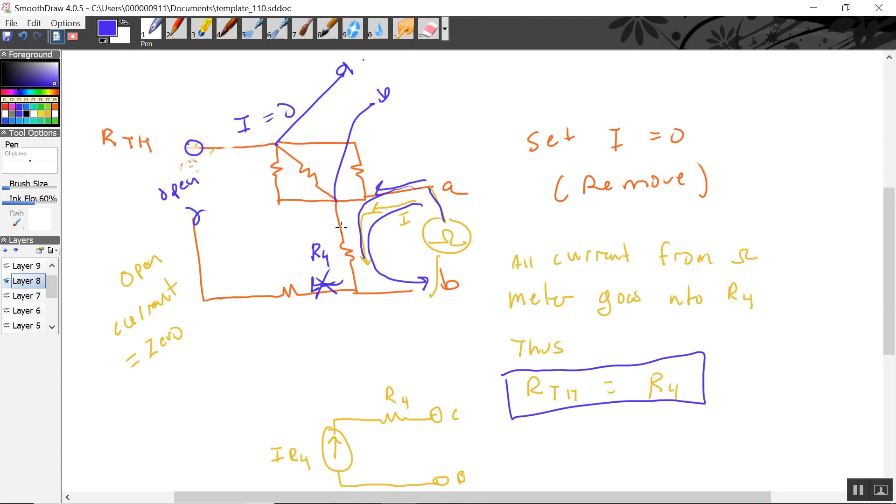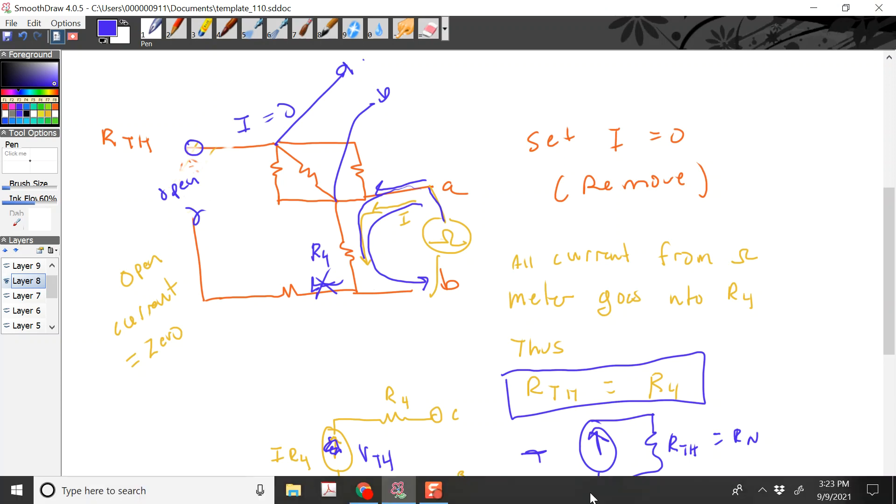Once you have this, you convert it to the Norton equivalent. But, RthEvenin equals R Norton, and then this is turned into a current by scaling the voltage in the Thevenin value of resistance. So, really, it might look like two different topics, but it's really the same topic. Anyway, I hope that helps out.